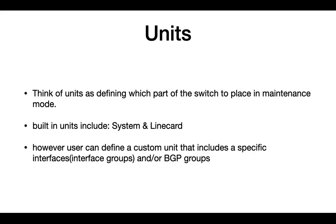Now let's look at some terminology for understanding maintenance mode. The first is units. Units enable you to define which part of a switch to place in maintenance mode — that part could be the entire switch or a line card. Built-in units include the system unit, which places the entire switch in maintenance mode, and the line card unit, which places a specific line card in maintenance mode. You could also define custom user-defined units that match specific interfaces on a line card or specific BGP peer groups, giving you more granularity in defining which part of the switch to place in maintenance mode.